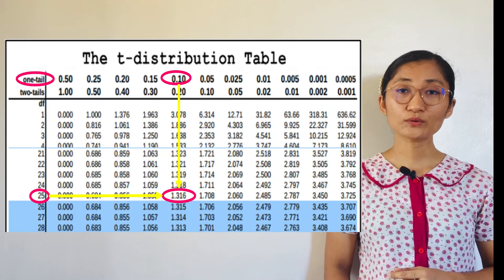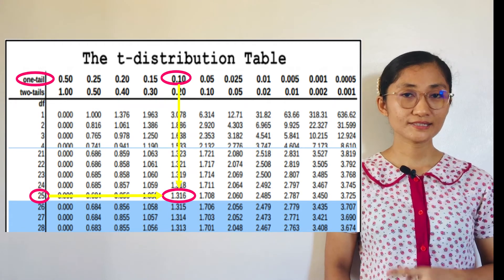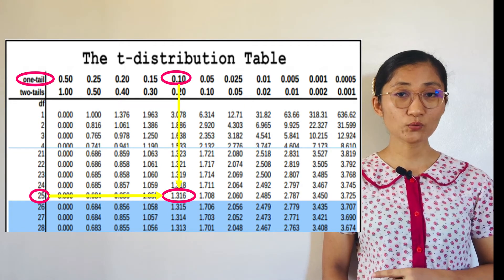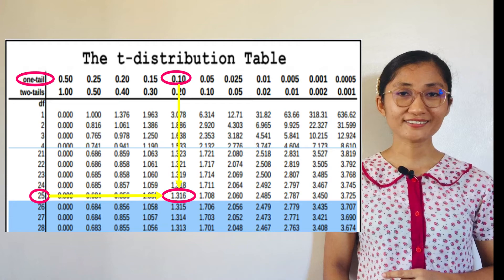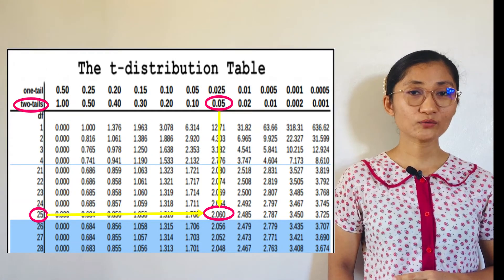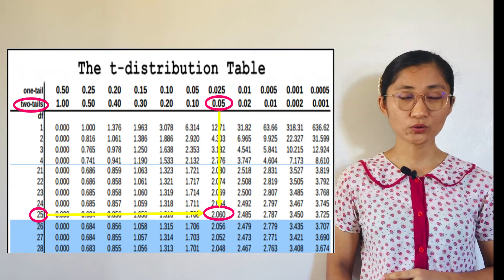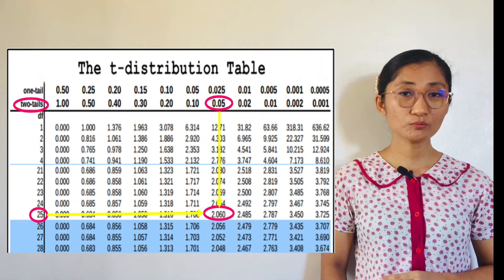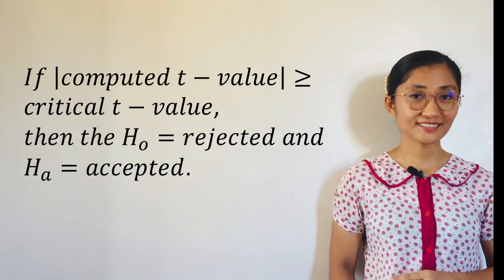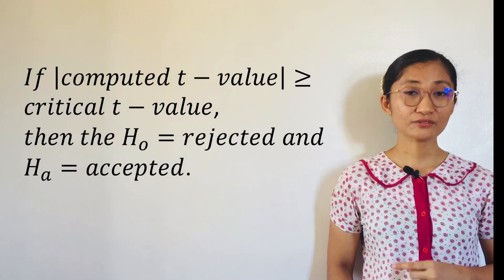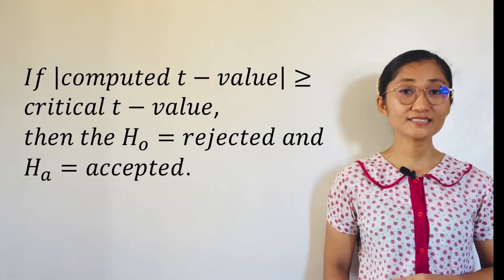For example, with alpha equals 0.10 and df equals 25, for a one-tailed test T equals negative 1.316 or positive 1.316. For a two-tailed test, use alpha over 2 equals 0.05, where T equals negative 2.060 and T equals positive 2.060. If the absolute value of the computed test statistic T is equal to or greater than the critical value, then the null hypothesis is rejected and the alternative hypothesis is accepted.